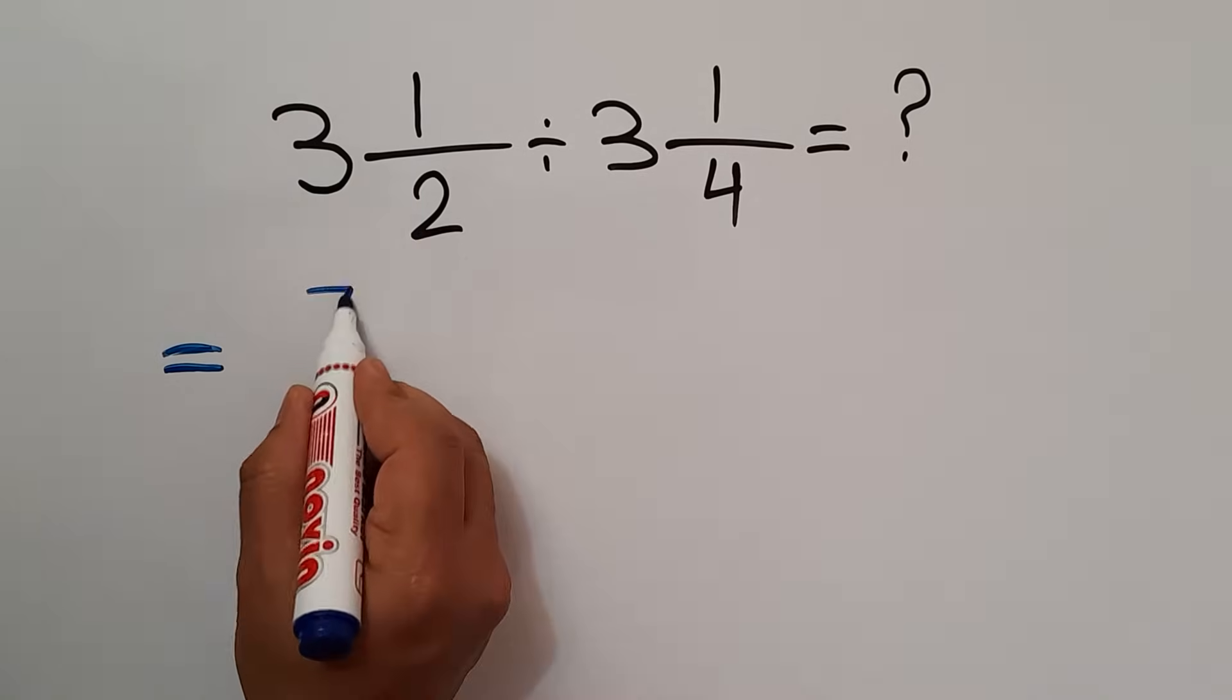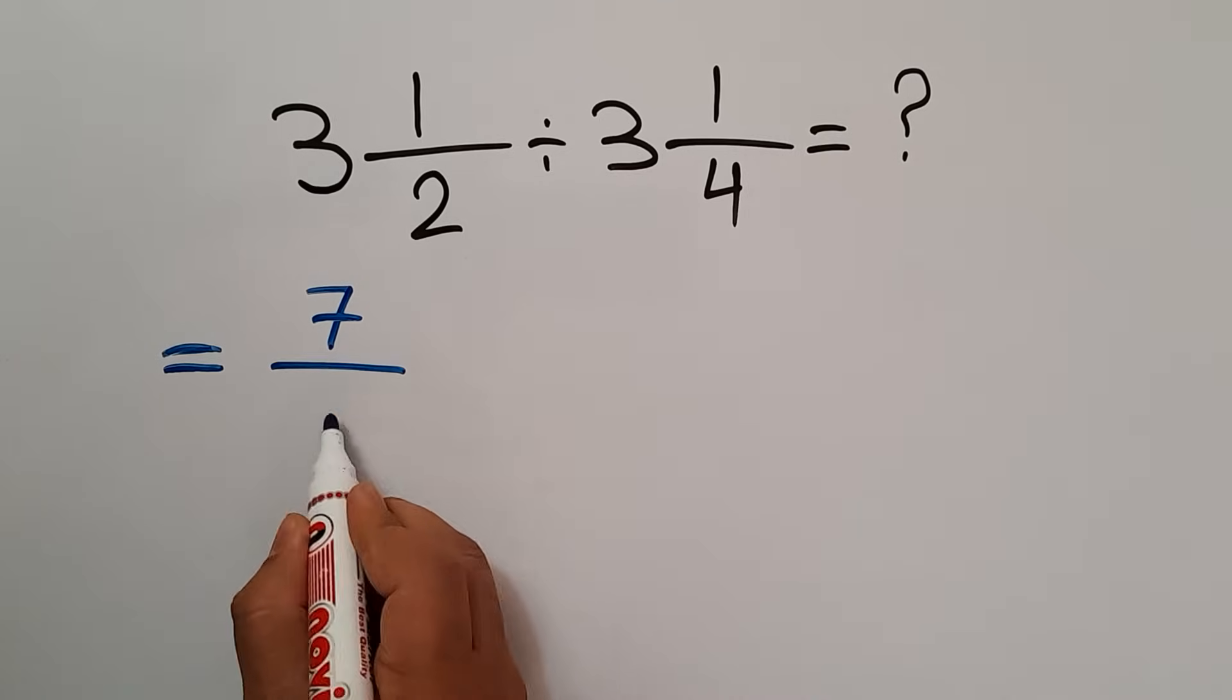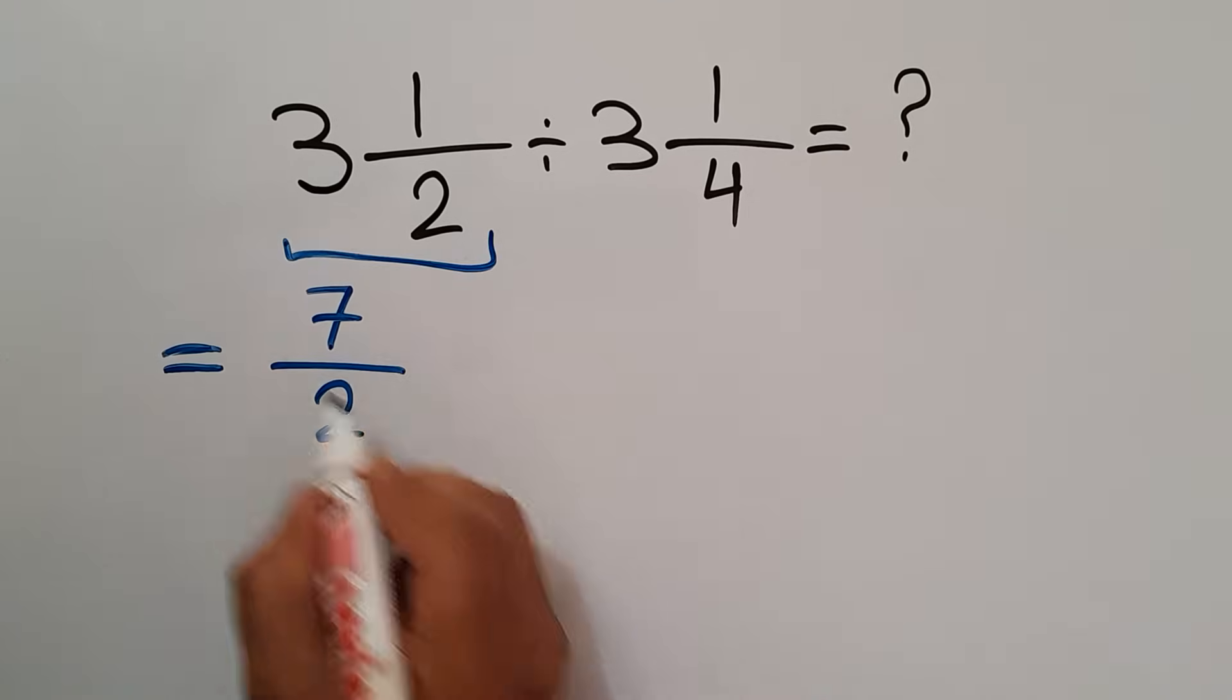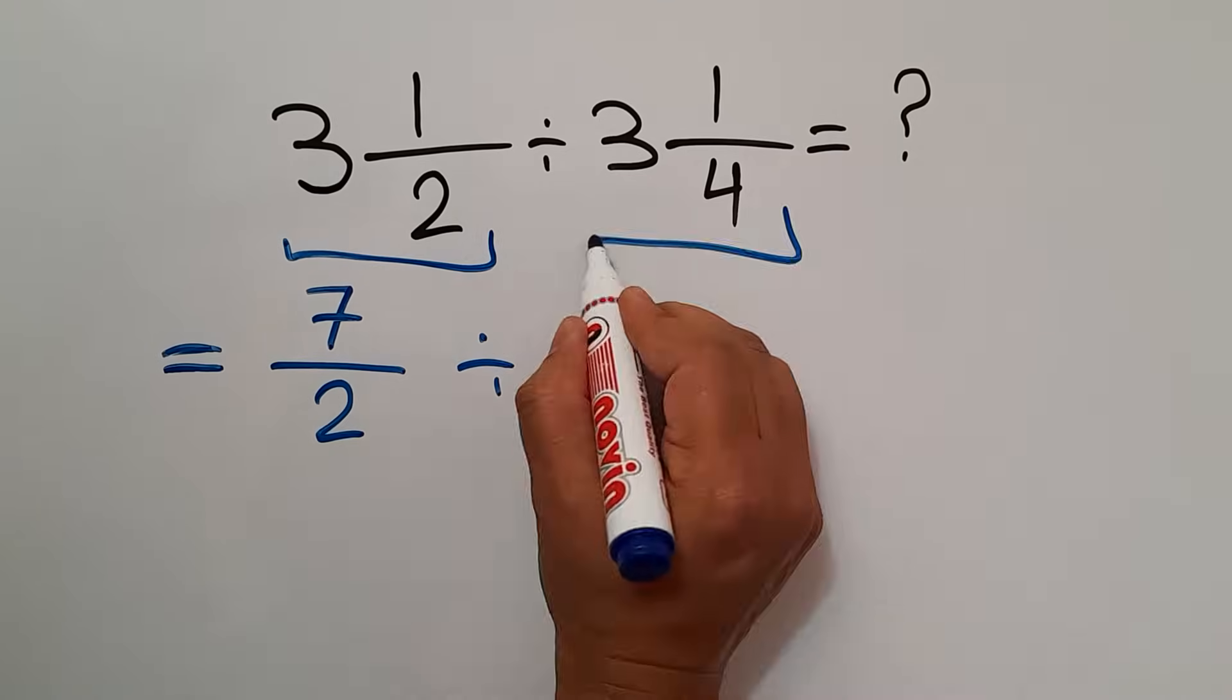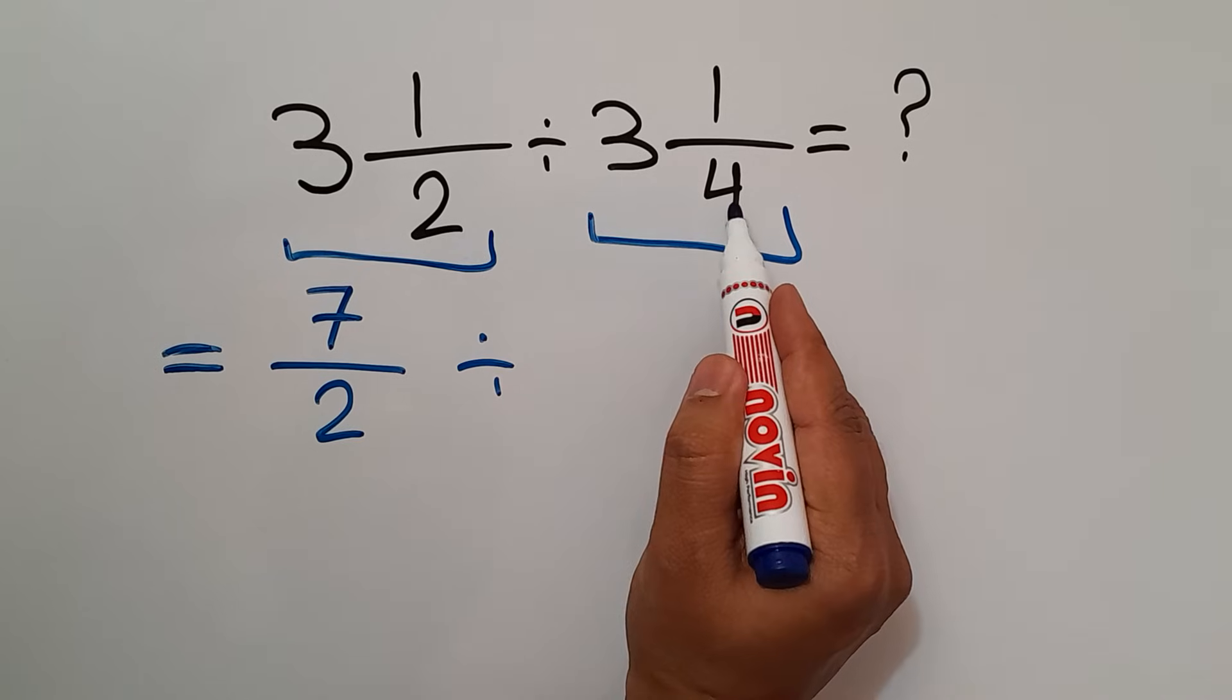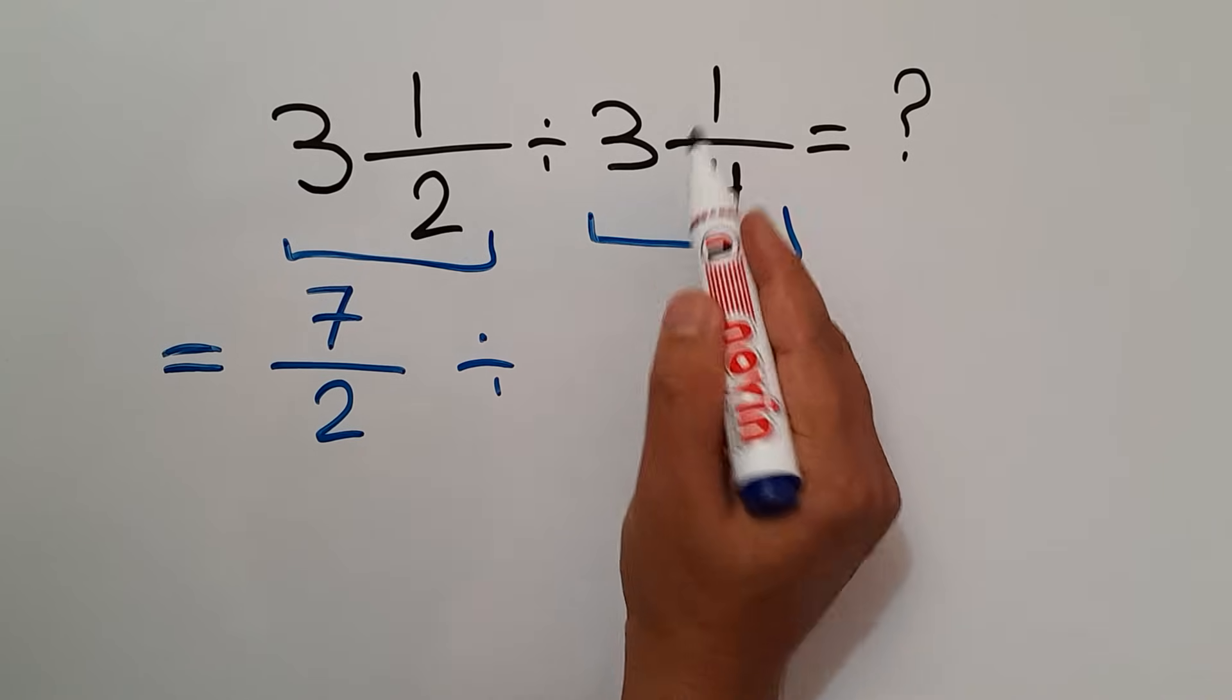So 13 over 4. Now according to the KCF rule: K stands for keep, C stands for change, and F stands for flip.